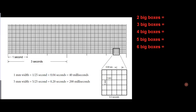Welcome back. Now that we have an understanding of EKG paper, EKG strips, big boxes, small boxes, and that kind of thing, we can start talking about a quick and easy way to determine the heart rate of an EKG strip. We have EKG paper here, marked off in one-second sections, a three-second section, and small and big boxes below.